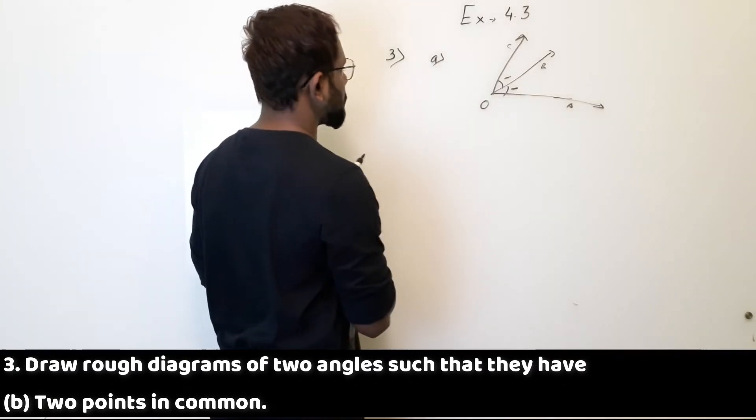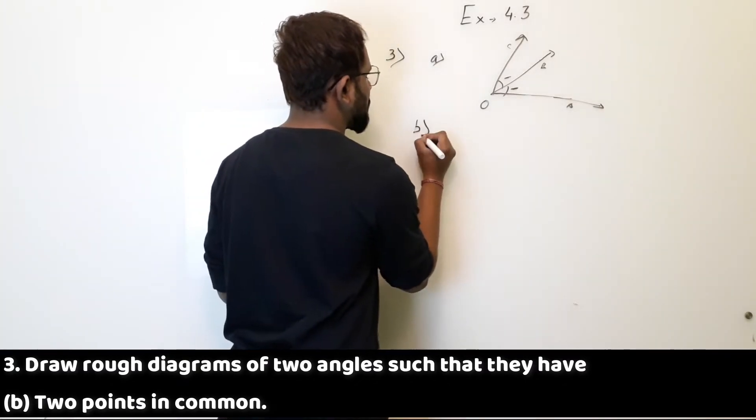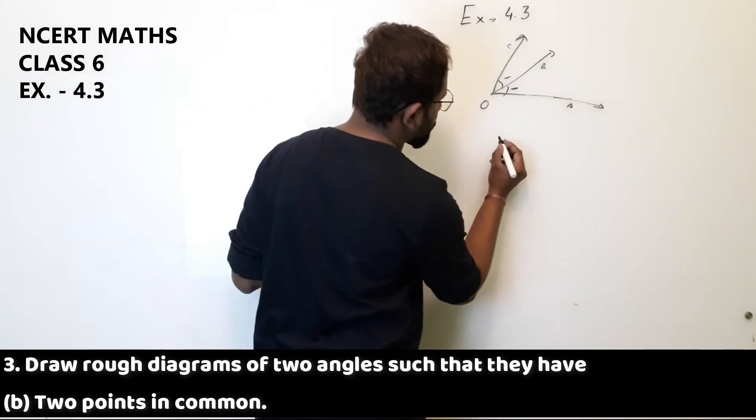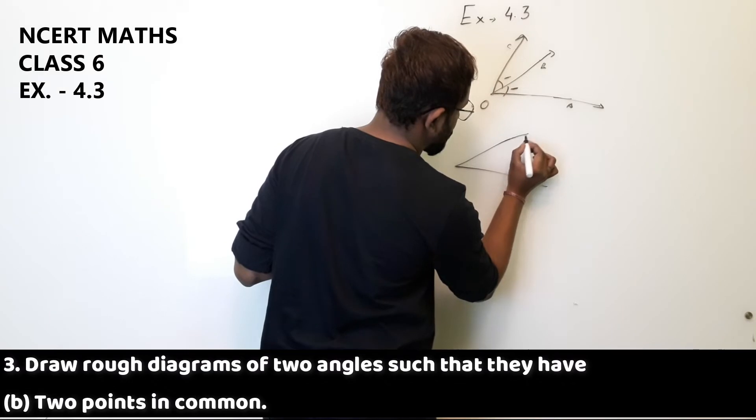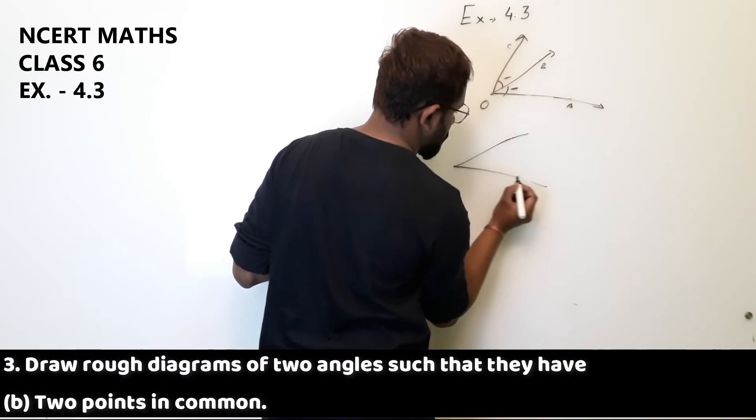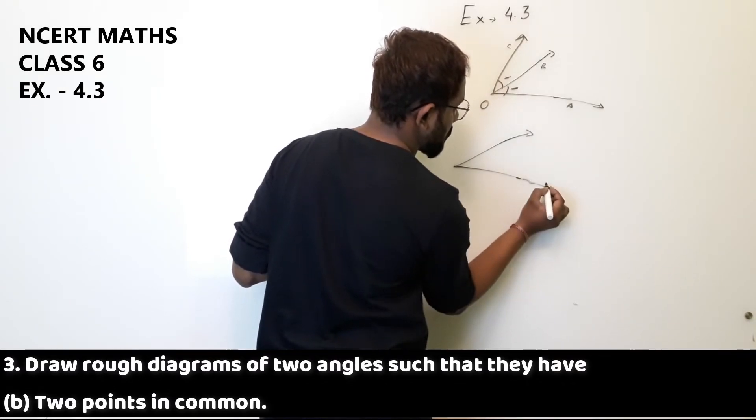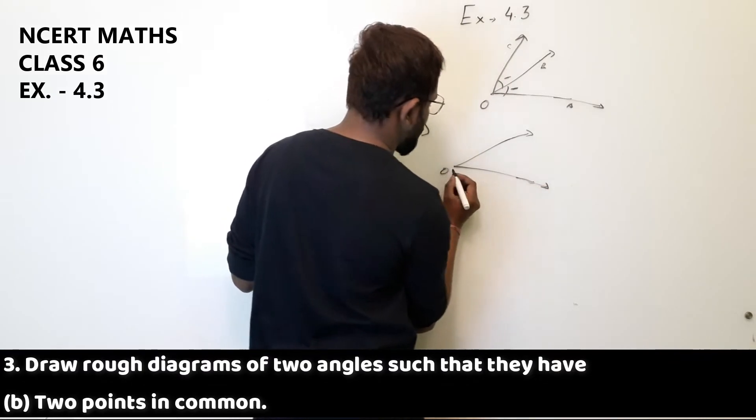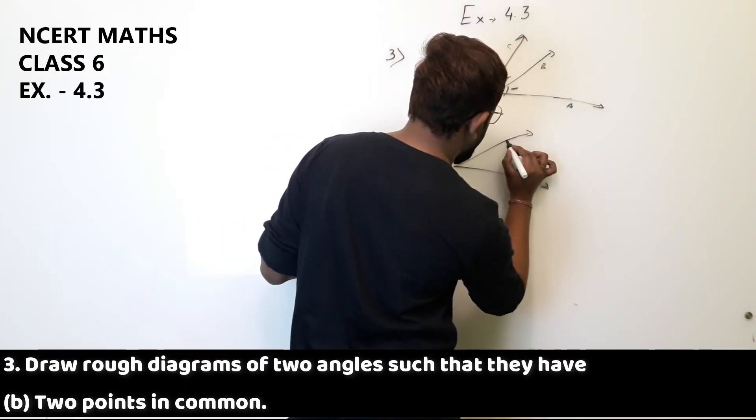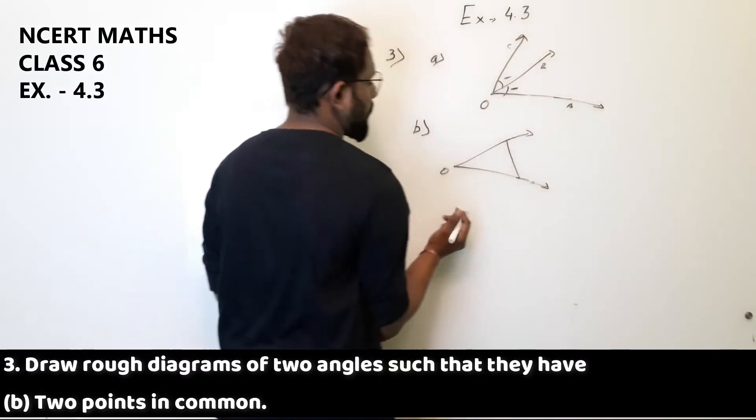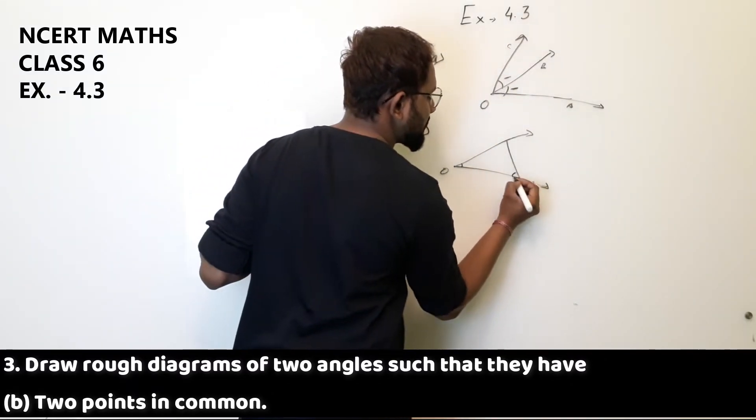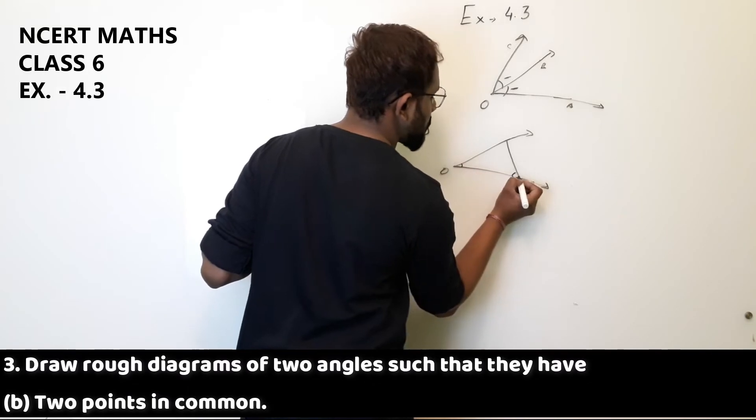Two points in common. Part B, they have two points in common. So it will be like this, one point, this one point, this and this. One angle and this angle has two points in common.